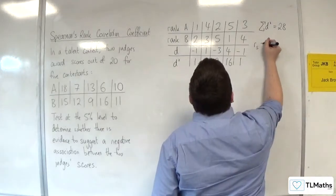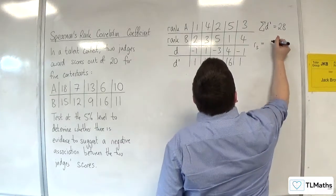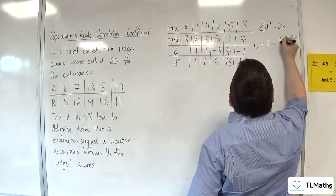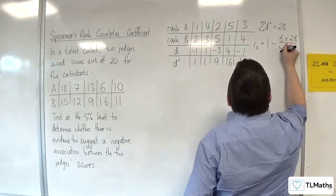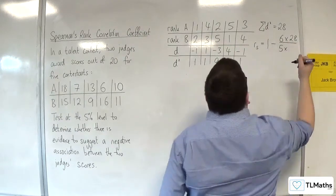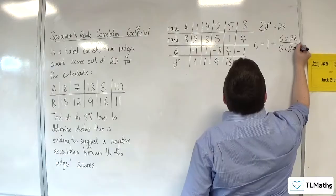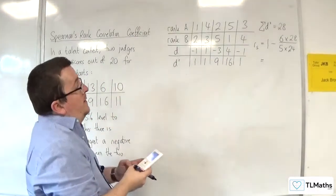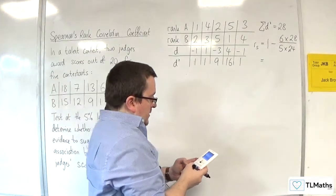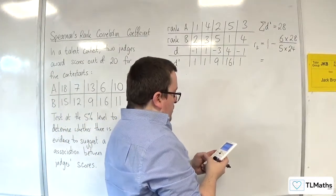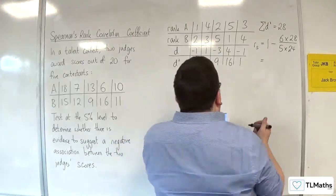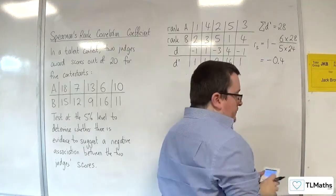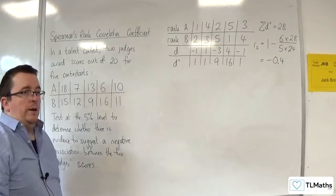So, Spearman's rank correlation coefficient is 1 take away 6 lots of the sum of d squared, divided by n, which is 5, times by 5 squared, take away 1, so 24. So, we have 1 take away 6 times 28 over 5 times 24, and we get minus 2 fifths, so minus 0.4. So, that is my correlation coefficient.